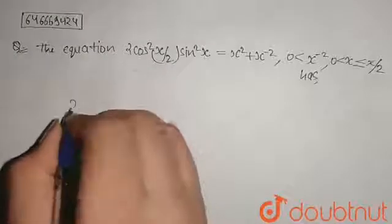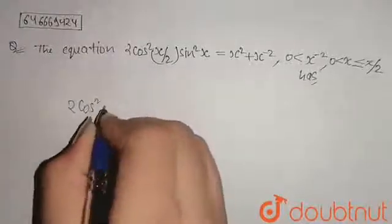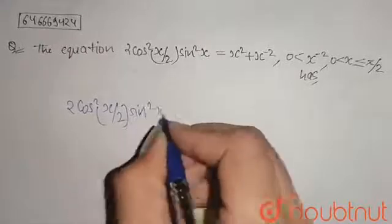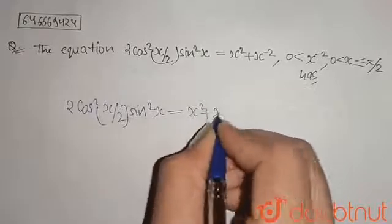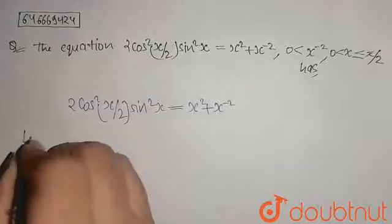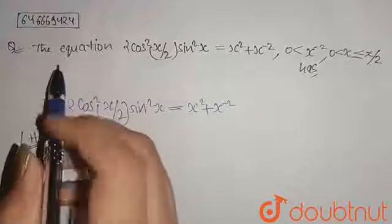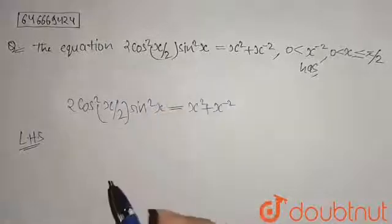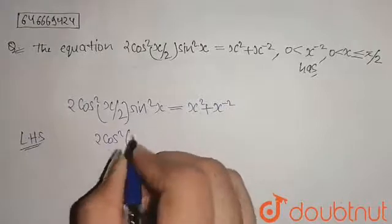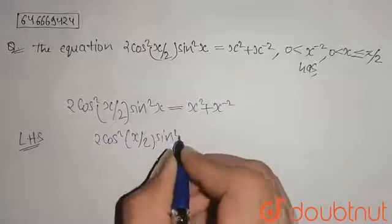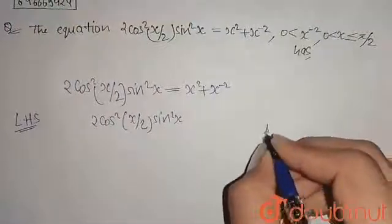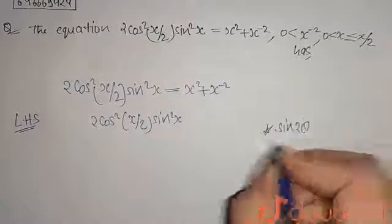So the given equation is 2cos²(x/2)·sin²x = x² + x⁻². Now here I am taking the LHS part for finding its solutions. We have to find the solution of this equation. I am taking 2cos²(x/2)·sin²x. We know the identity that sin2θ = 2sinθcosθ.